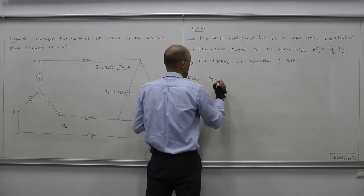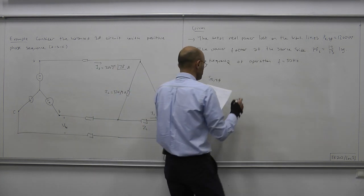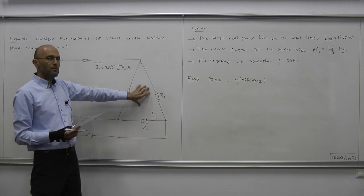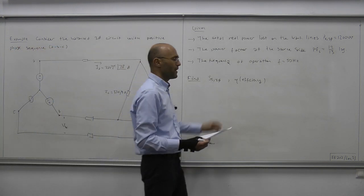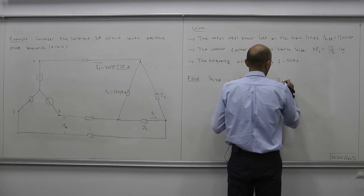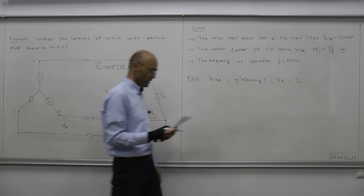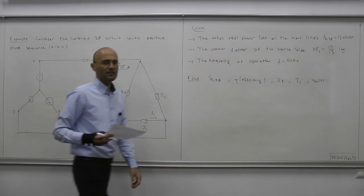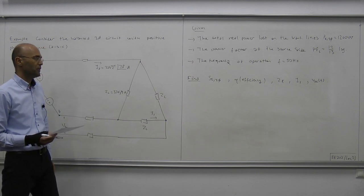Given this information plus the line current and the per-phase impedance of the delta-connected load, we are asked to find: the total complex power SS three-phase supplied by the source; the efficiency of the system, which is the real power consumed by the load over the real power provided by the source; the per-phase line impedance ZL; the phasor I1; and finally, the time-domain signal corresponding to VBC, the line-to-line voltage on the source side.